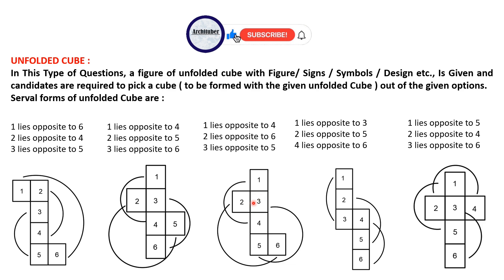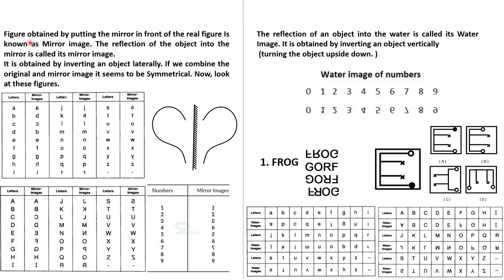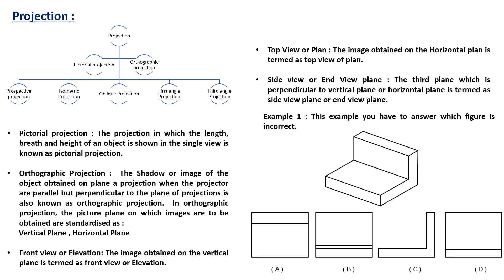We have mirror image and water image. You should know how a letter looks in its mirror image and how it looks in its water image. For the revision I have given you the letters and numbers along with one example. Then we have projections — top view, side view, front view, and elevations.